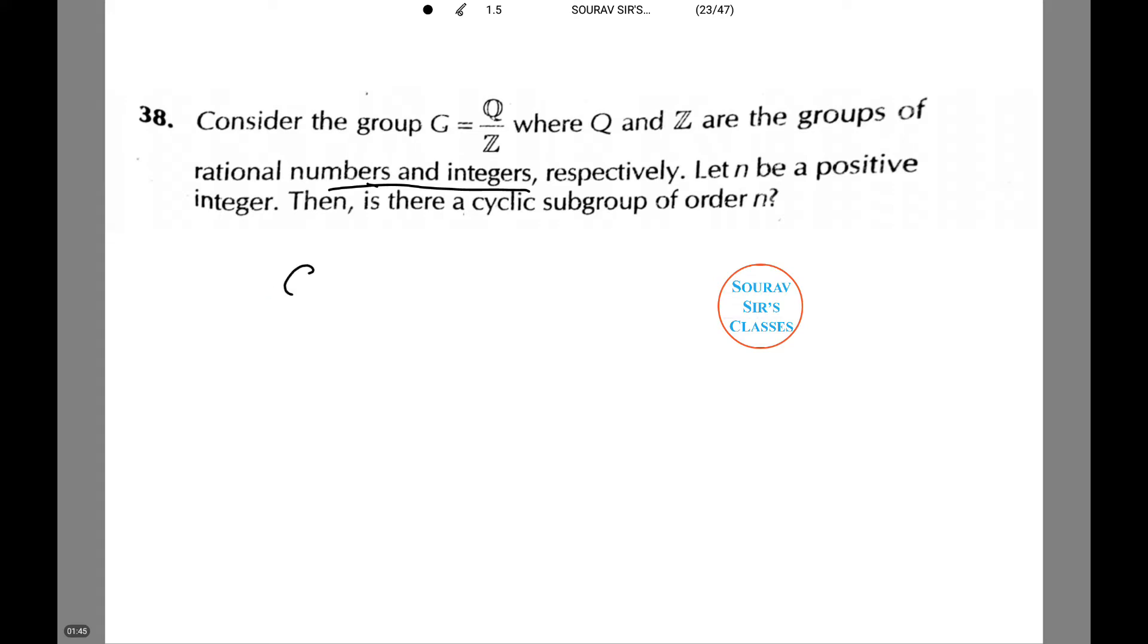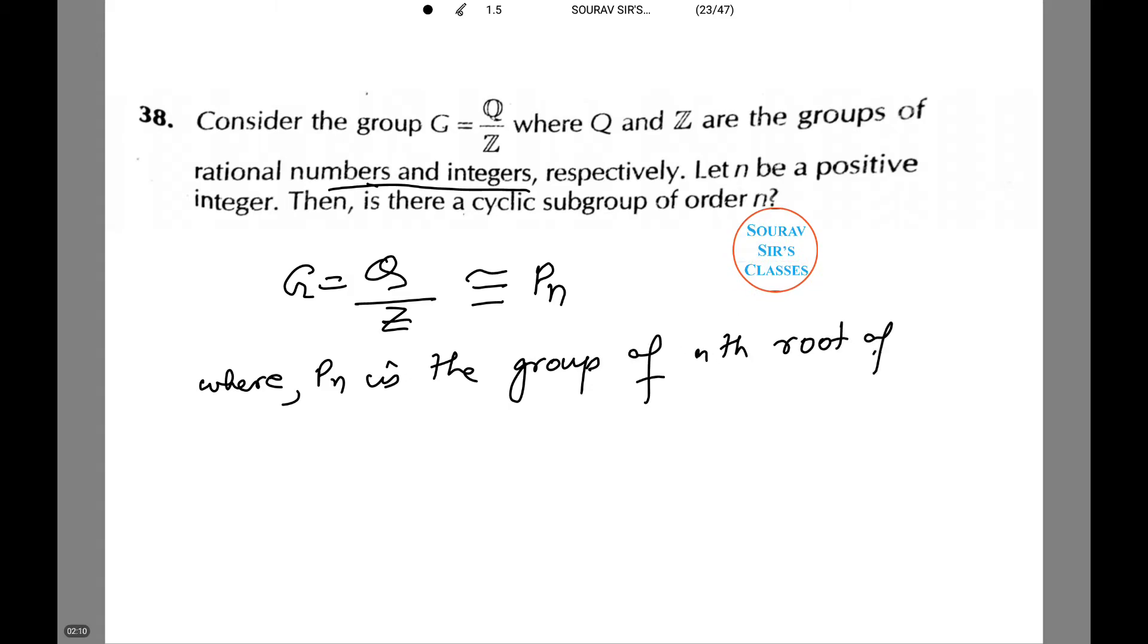Let's figure it out. We know that G equals Q by Z, which is roughly equals to P_n, where P_n is the group of nth roots of unity. Thus, there are several cyclic groups of order n.